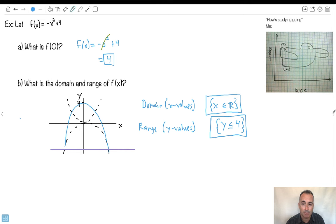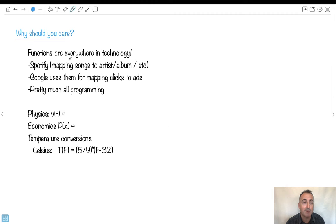I hope that helps you understand domain and range. And why should you care? Well, functions are everywhere. Spotify uses them for mapping songs and artists' albums. Google uses it for mapping clicks to ads. Pretty much all programming uses this. In physics, we have things like v(t) and a(t). Economics, like profit versus amount of units sold. Temperature conversion, like Fahrenheit to Celsius. The temperature as a function of F could be 5/9 times F minus 32. So if you put in 32 Fahrenheit, 32 minus 32 is 0, and that's why it's 0 degrees Celsius. There's lots of places where we meet functions.